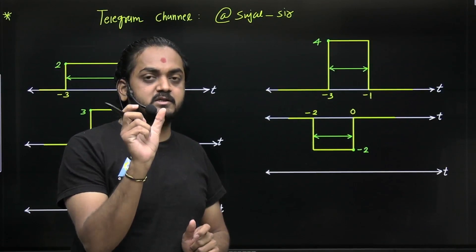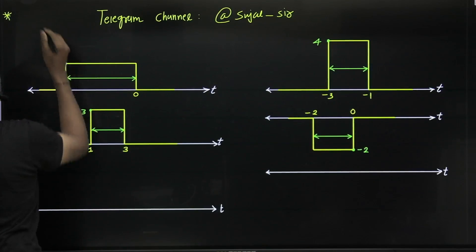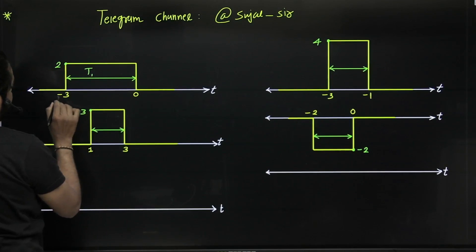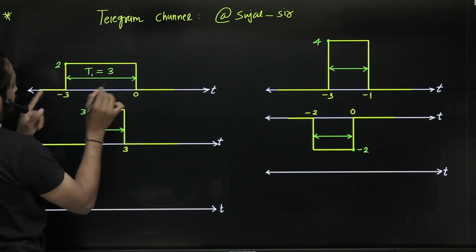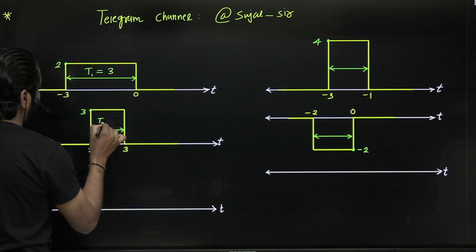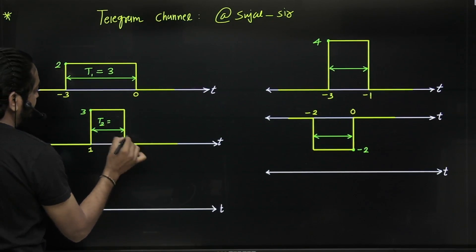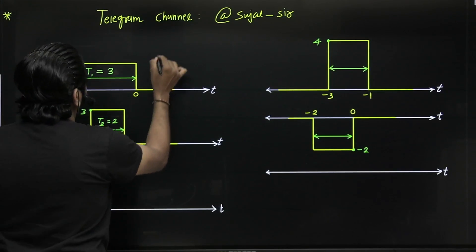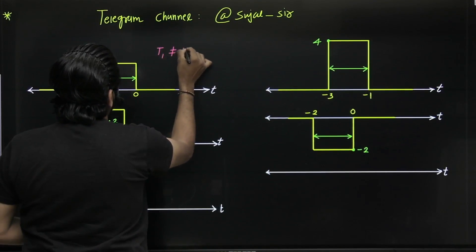Here the length of the first signal is from minus 3 to 0, so the width of this pulse is 3. Here the width is from minus 1 to 1, that is width is 2. So t1 is not equal to t2 — these are unequal length pulses.